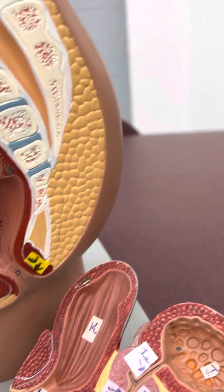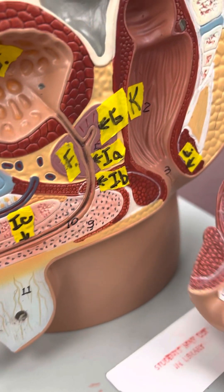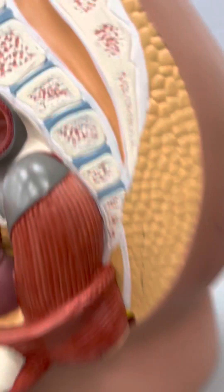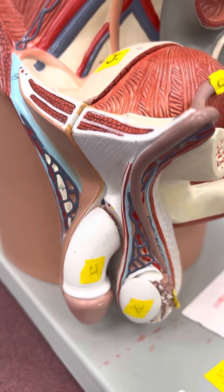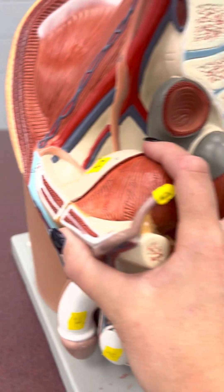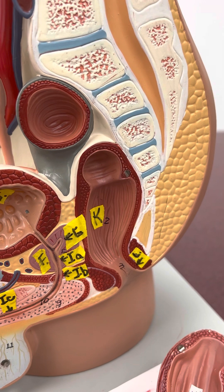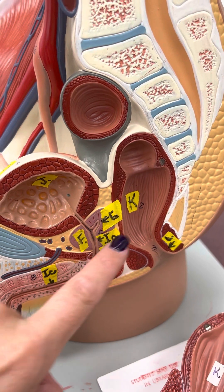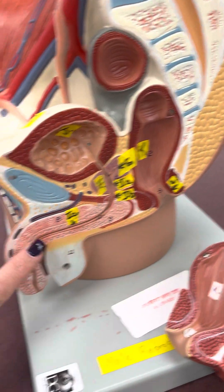G is the seminal vesicles, which are right here — they're outside. H is the penis. Then there's the urethra — you don't have to differentiate between the parts, but there are two different branches. The first part is the penile urethra, which carries the sperm.